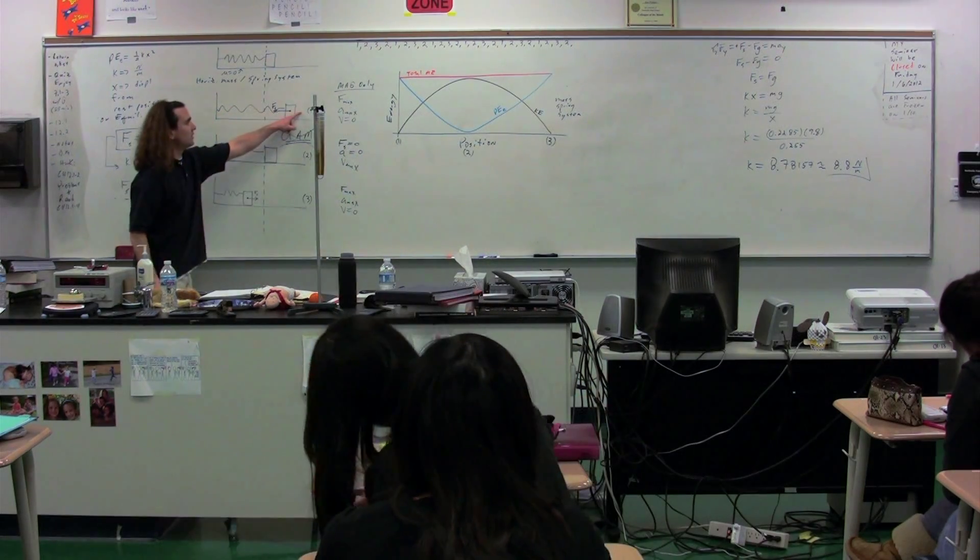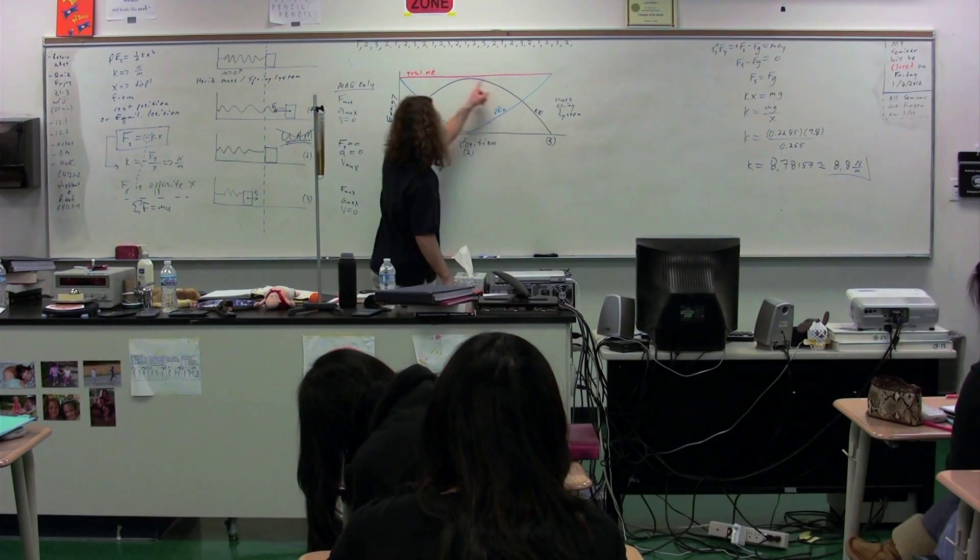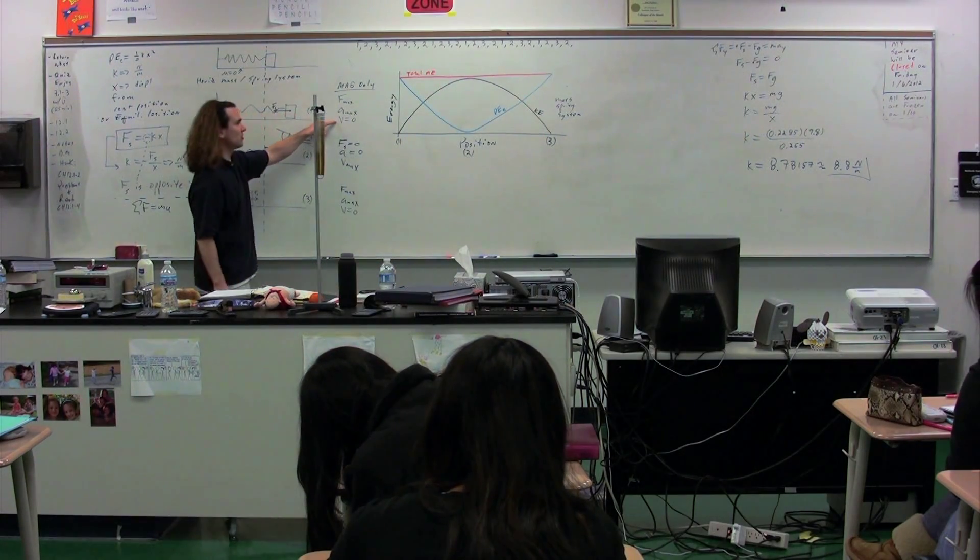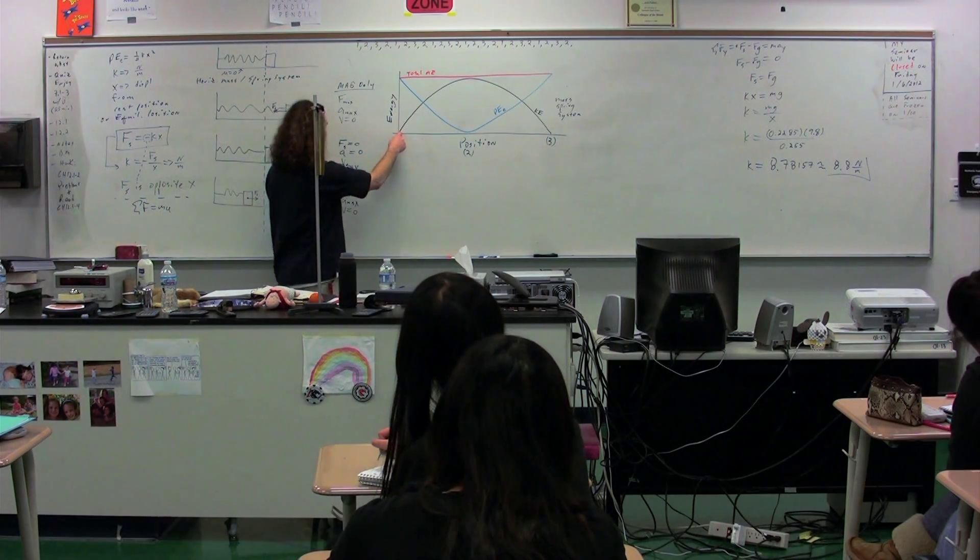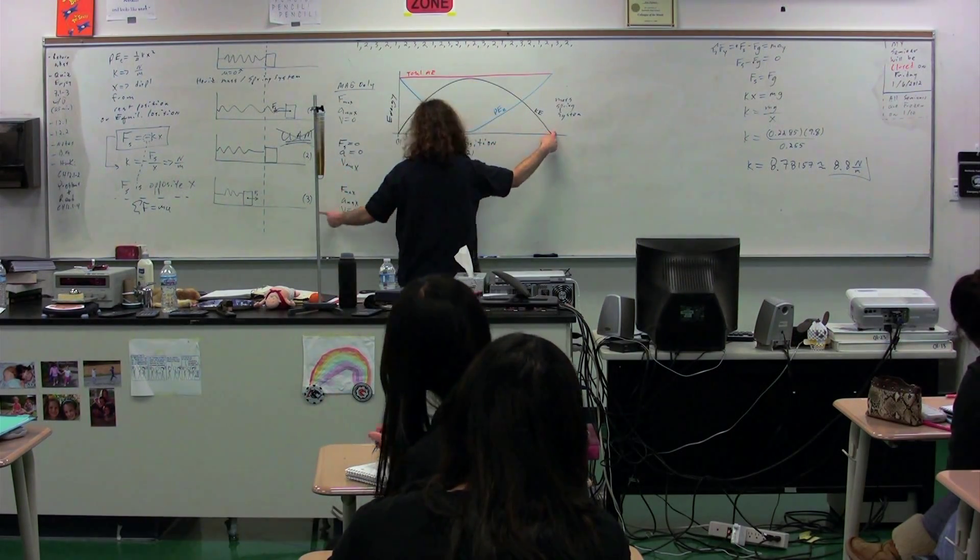At position one, for example, just looking at the kinetic energy, the velocity at position one is zero, therefore the kinetic energy is zero. The velocity is at a maximum, therefore the kinetic energy is at a maximum, and at position three,